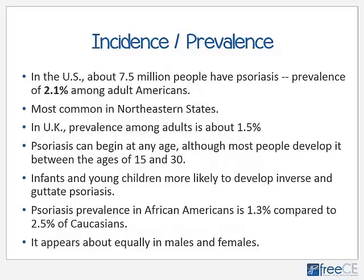In the United States, about 7.5 million people have psoriasis, representing 2.1 percent of the adult population. It seems most common in the northeastern states such as New York, Connecticut, Maine, and Rhode Island, suggesting a possible climate connection. Compared to the UK, prevalence is lower among adults there at 1.5 percent. Psoriasis can begin at any age, although most people who develop it do so between the ages of 15 and 30.